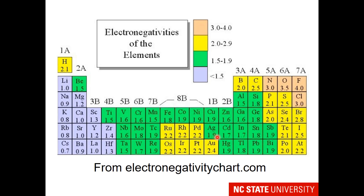What you notice about silver is that it is one of those metals with a higher electronegativity. So when silver is in a compound with chlorine, the electronegativity difference is low, and this turns out to be more of a polar covalent compound than an ionic compound. That is true of many metals, such as copper or mercury.